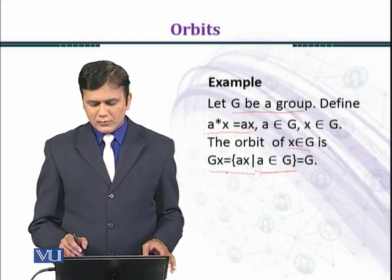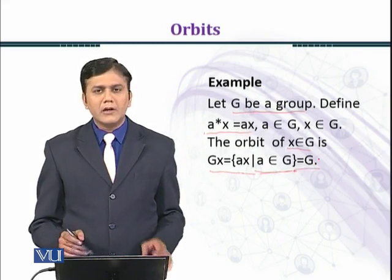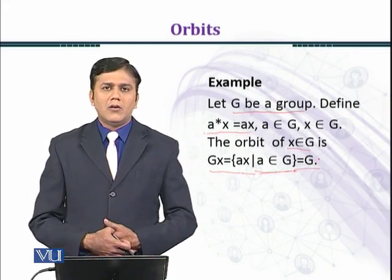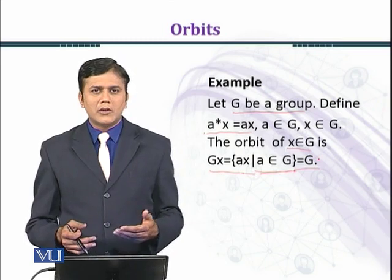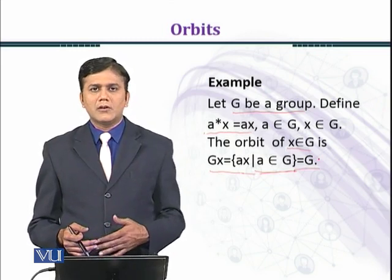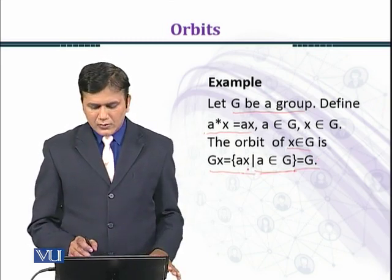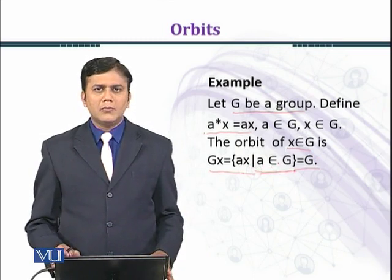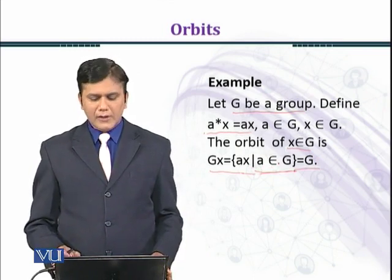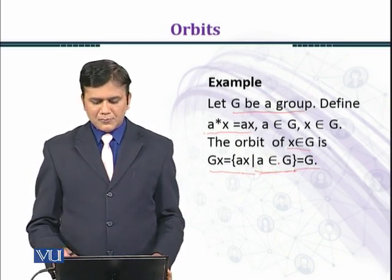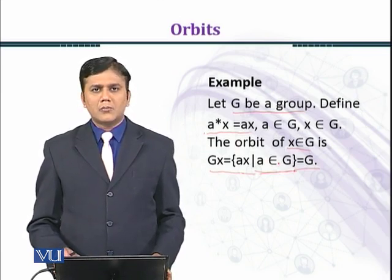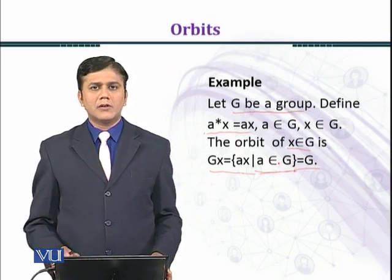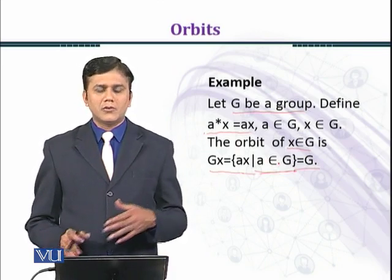This orbit equals G itself. In this translation action, the element is simply translated — a is any element of G, and when you multiply by a, you get a·x. In this way all elements of the group are covered; the elements are just shifted.